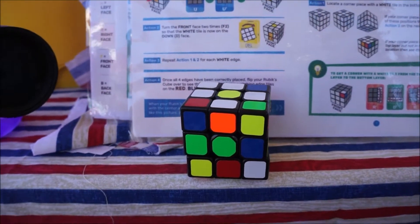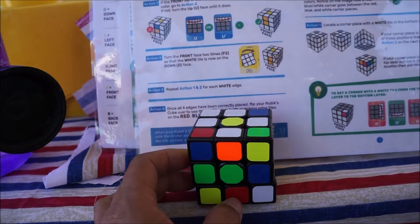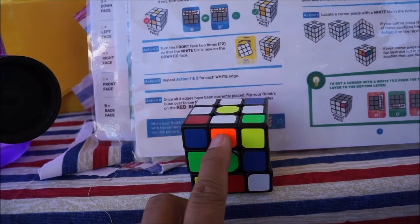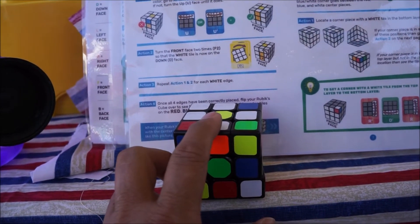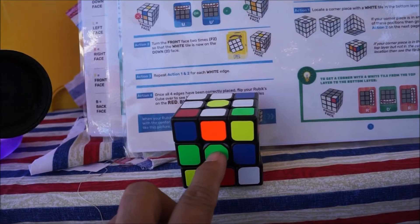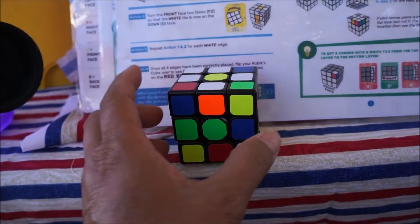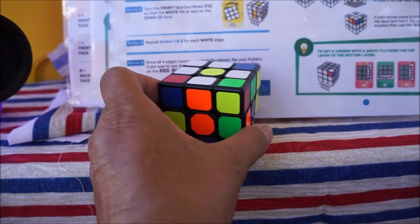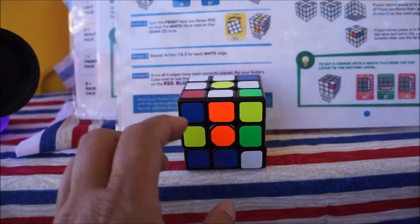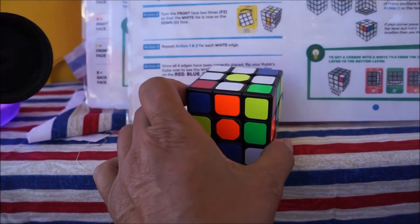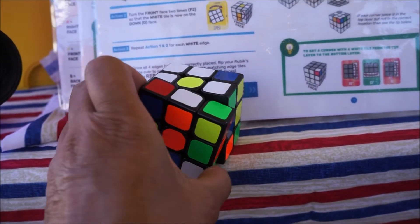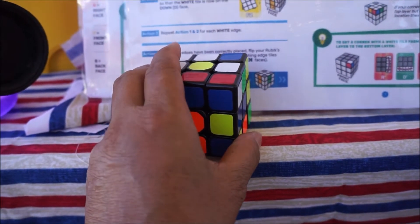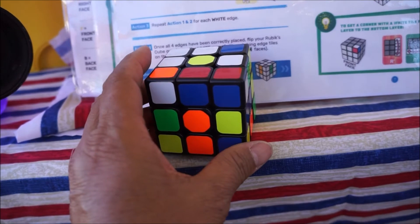Okay, so the next it says, if the front tile of the up edge piece matches the center tile color, go to action two. If not, turn the up face until it does. Action two. Turn the front face two times so that the white tile is now on the down face. One, two. Repeat for each white edge. Let me do that and I'll come back.